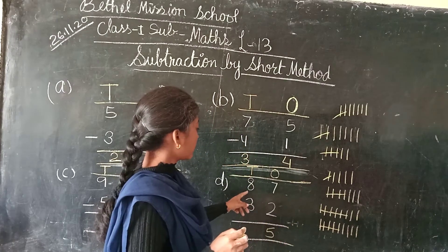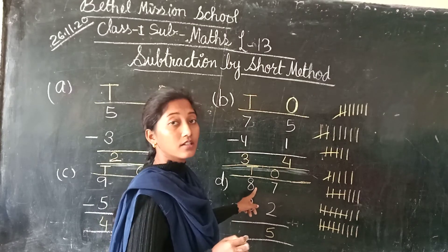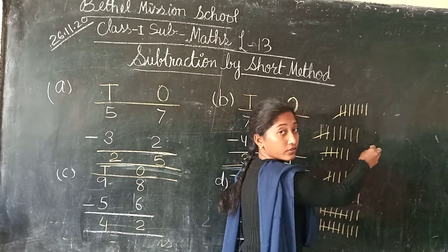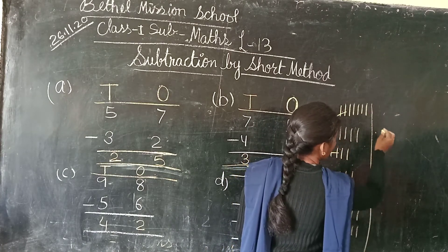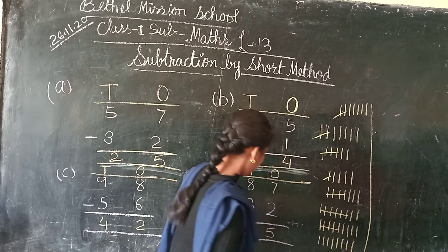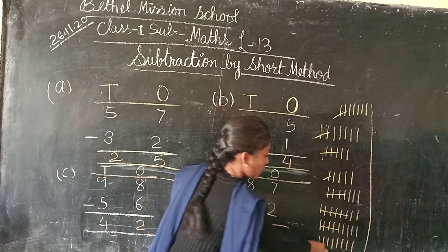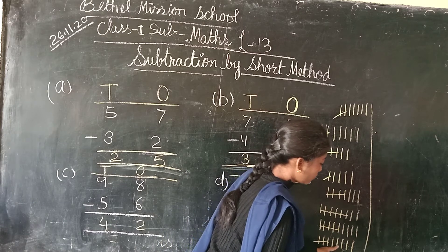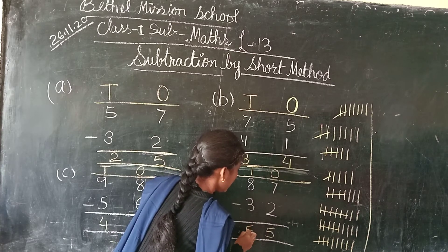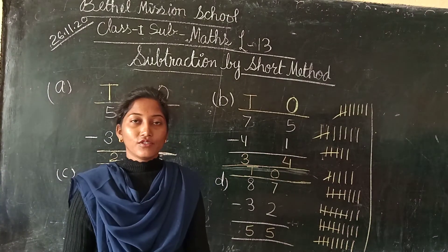And next we have to subtract 8 tens minus 3. So we will draw 8 lines: 1, 2, 3, 4, 5, 6, 7, 8. We have to cut 3 lines: 1, 2, 3. How many lines are left? 1, 2, 3, 4, 5. So we write here 5. Did you understand? Thank you.